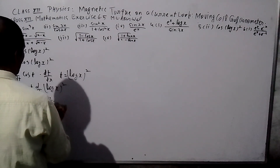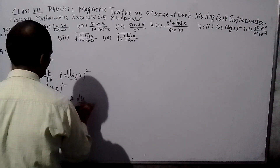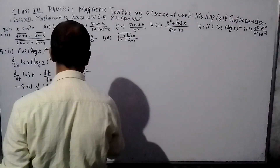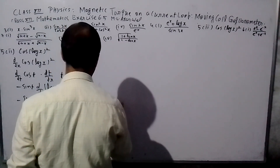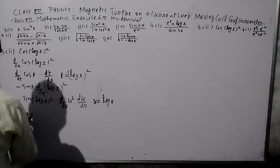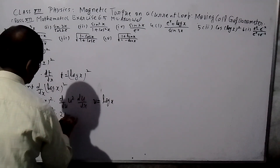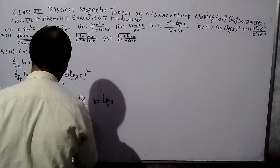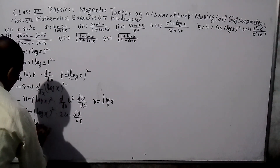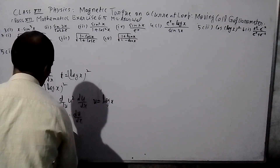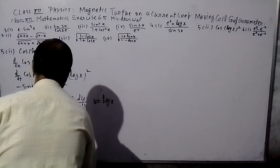Now, I am going to do the same thing. So d/d(U²) · d/dx of U², where U = log x. So d/dx of U² gives 2U into dU/dx, where U = log x. So minus sin(log x²) into 2U, into dT/dx, where U = log x.